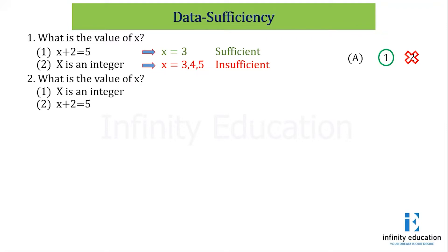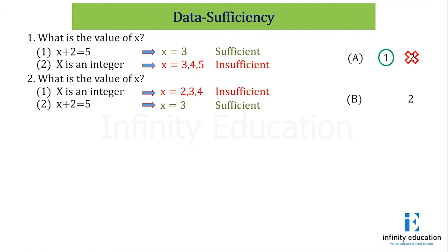Next question — again what is the value of x? Statement 1 says x is an integer, so x can be anything: 2, 3, 4 — this is insufficient. Statement 2 says x + 2 = 5, so the value for x should be 3. As we have established, except 3 there is no other value for x for which the equation is satisfied. So B is the answer because statement 1 alone is insufficient but statement 2 alone is sufficient.